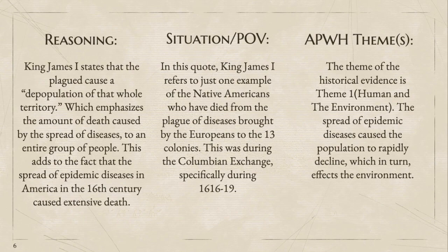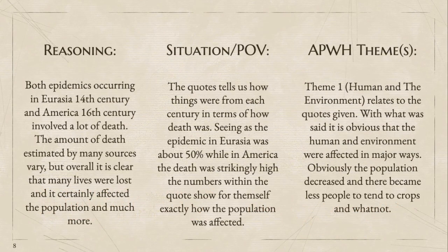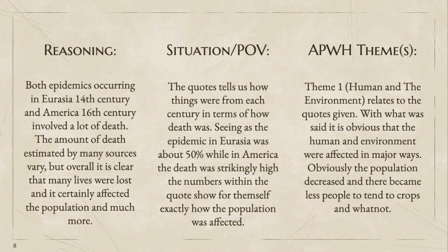We chose this quote from King James I as historical evidence because he stated that the plague caused the depopulation of an entire Native American territory, which emphasizes the massive death of Native Americans during the Columbian Exchange, strengthening our statement that the spread of epidemic diseases in America during the 16th century caused extensive death. To support our thesis and overall claim, there is an excerpt from The Black Death, a primary source, which entails the death toll within the epidemic in Eurasia. On the right hand, we have a primary source from The History of Smallpox by James Carrick Moore, which also talks about the death toll and how it took place within America. Both pieces of evidence allow you to see how death toll took part in each epidemic, and each being a primary source from a different time period and area shows just how contrasting each one was.